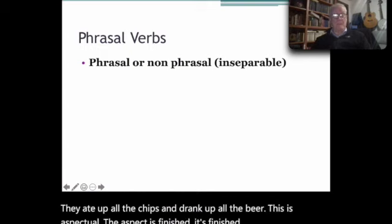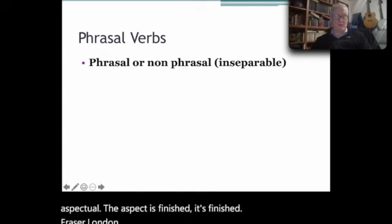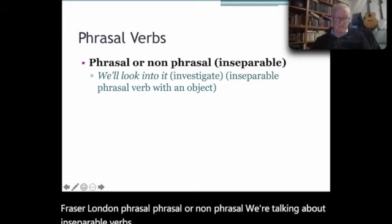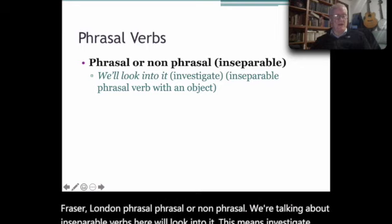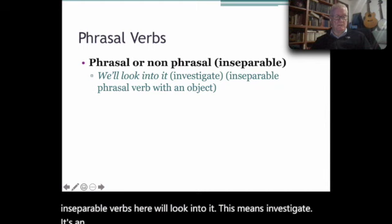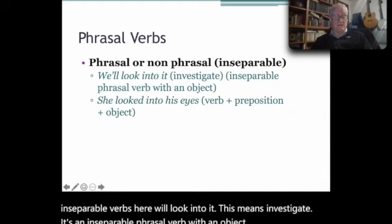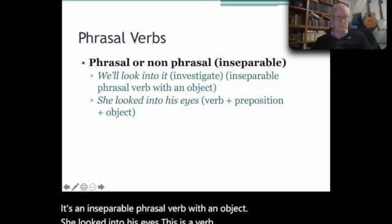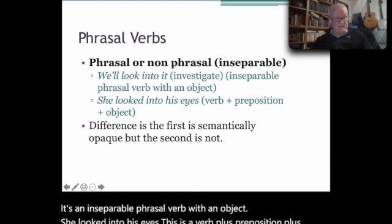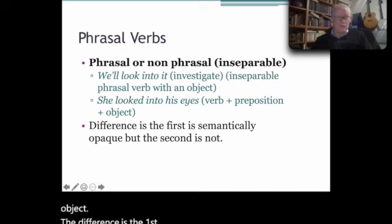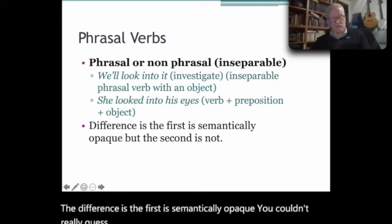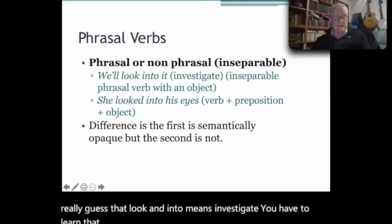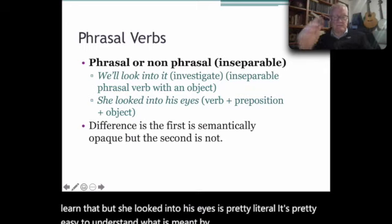Phrasal or non-phrasal. We're talking about inseparable verbs here. 'We'll look into it.' This means investigate. It's an inseparable phrasal verb with an object. 'She looked into his eyes.' This is a verb plus preposition plus object. The difference is the first is semantically opaque. You couldn't really guess that 'look' and 'into' means investigate. You have to learn that. But 'she looked into his eyes' is pretty literal. It's pretty easy to understand what is meant by that.